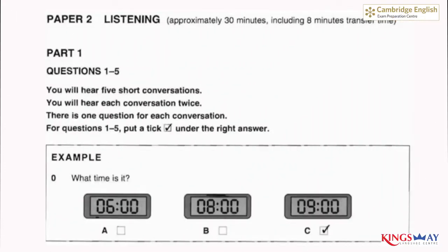This is the Key English Test, paper two, listening. Test number one. There are five parts to the test: parts one, two, three, four and five.